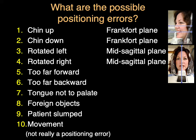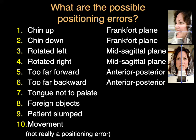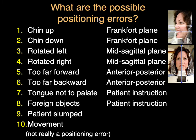The patient could be too far forward or too far backward, and that's a problem in the anterior-posterior direction. Tongue not to the palate, or foreign objects seen on a patient — earrings, removable dental devices, hair clips, and such. The problem here is patient instruction. We have to tell the patient to put their tongue to the roof of the mouth and leave it there until this is completed. We have to recognize potential foreign objects and ask the patient to remove those if possible.